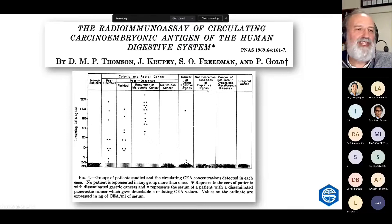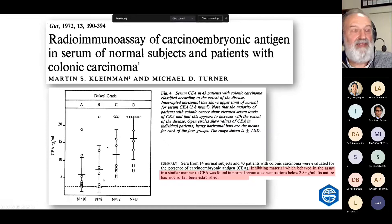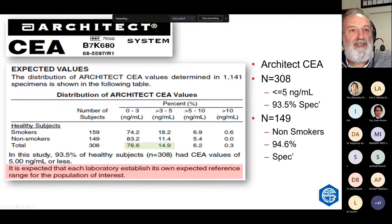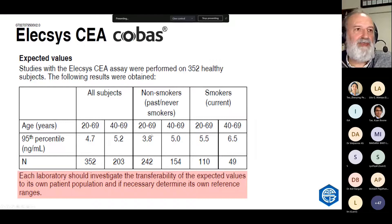Like PSA, in the early stages they thought CEA was only elevated in colorectal cancer. It rises in proportion to the cancer — in localized cancers it's often normal, but in advanced cancer it's usually elevated. The Architect kit insert says less than 5 is the reference interval. That cutoff is a little bit less specific for non-smokers. The COBAS kit insert notes it seems to rise a bit with age and is higher with smokers.